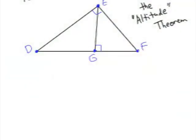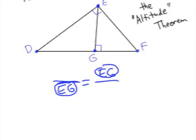Let's take a look at, in section 8.1, the altitude theorem. This theorem says that the geometric mean is formed from the altitude EG. Now when you say geometric mean, we're talking about putting it in these two places in a proportion, bottom left, upper right.